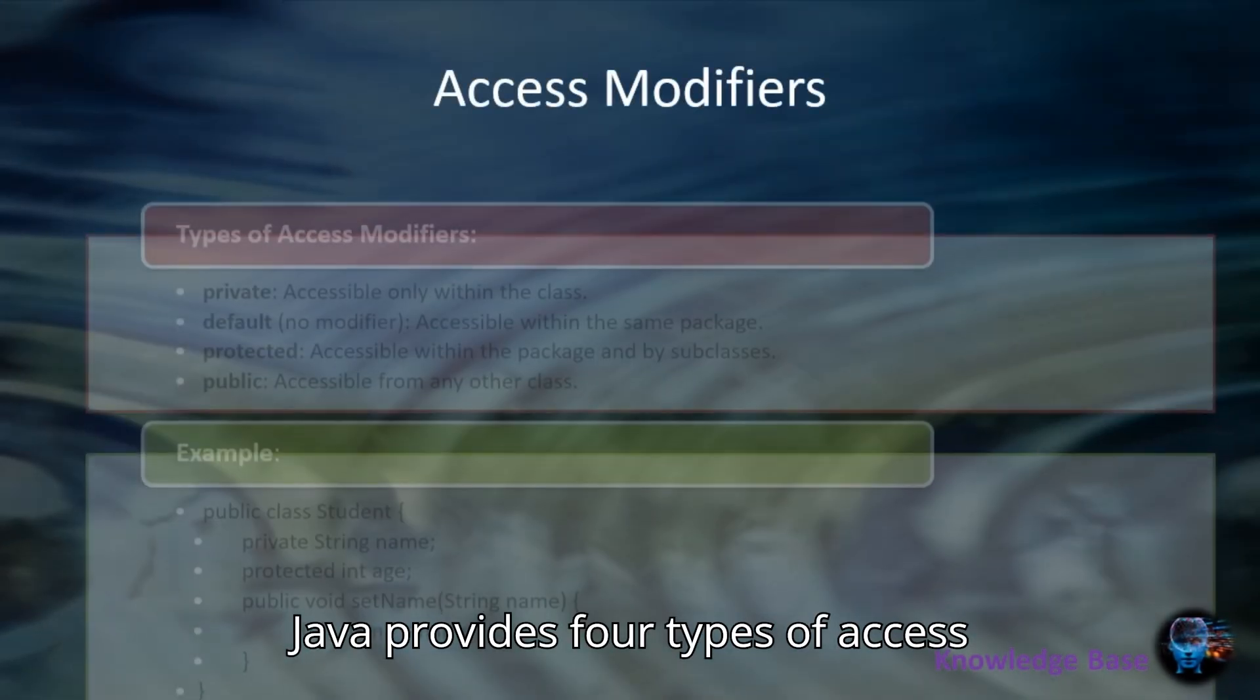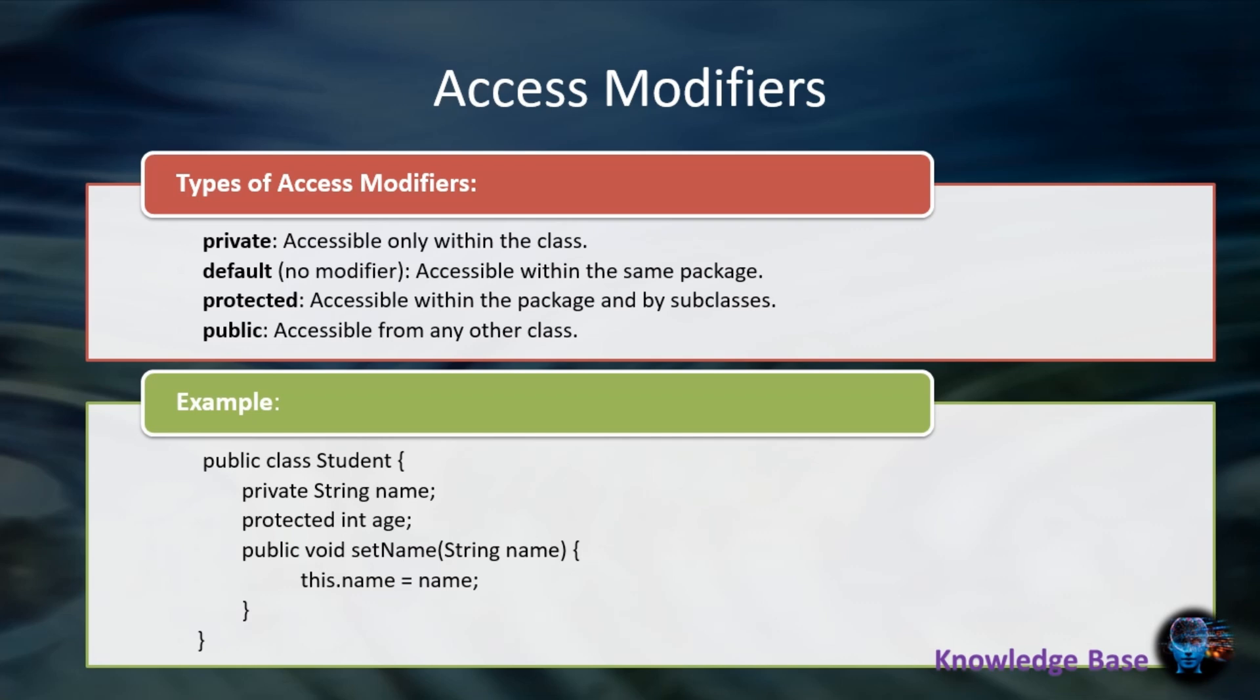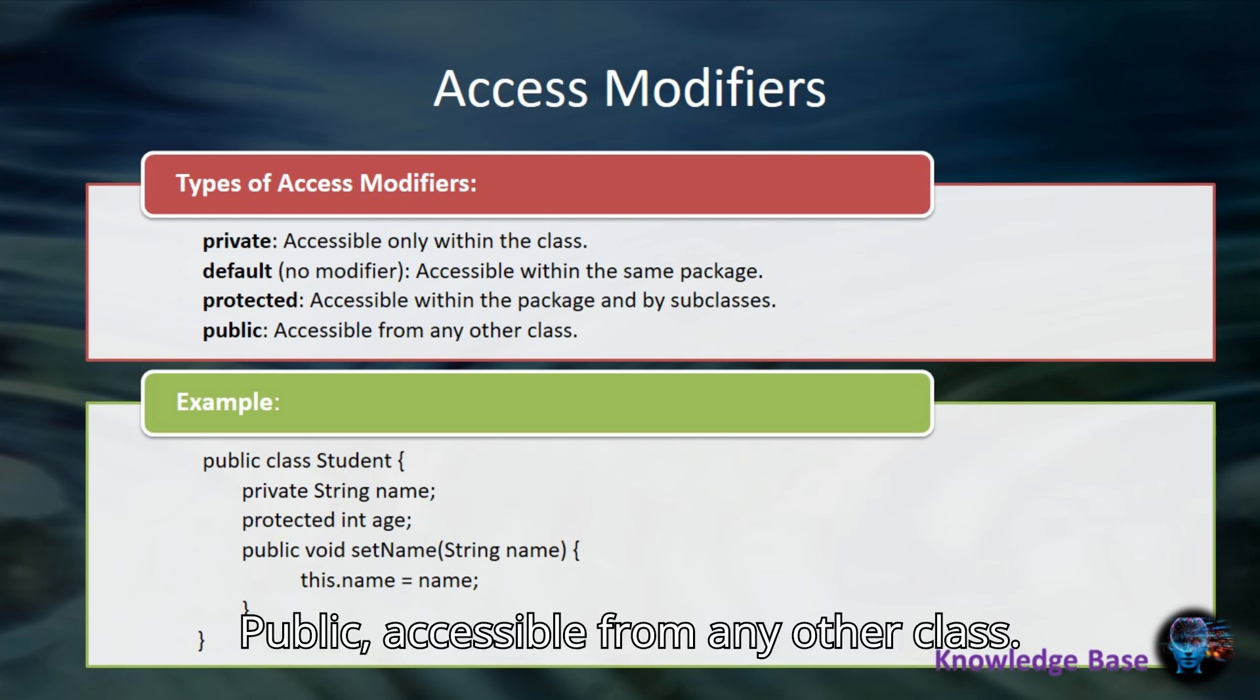Java provides four types of access modifiers that control the visibility and accessibility of classes, methods, and variables. One: private, accessible only within the class. Two: default (no modifier), accessible within the same package. Three: protected, accessible within the package and by subclasses. Four: public, accessible from any other class.